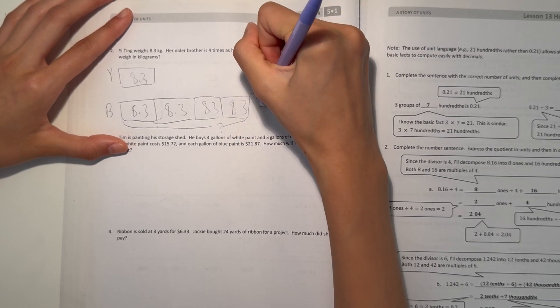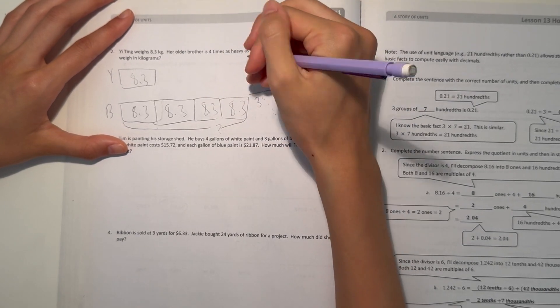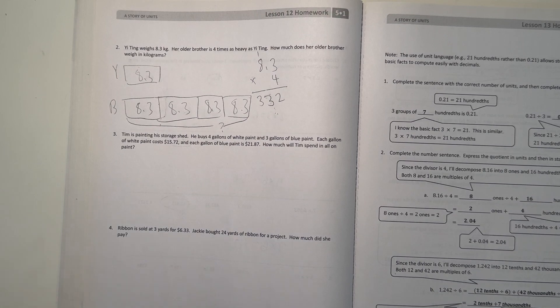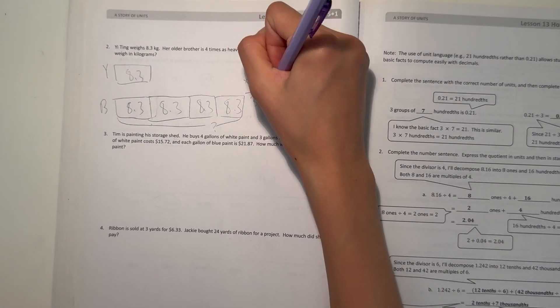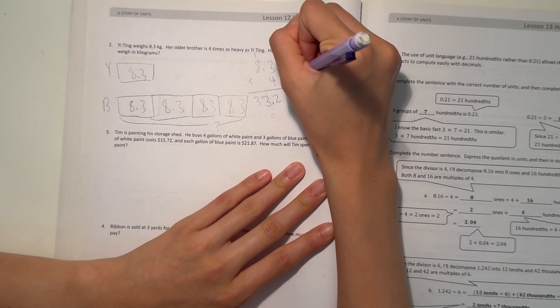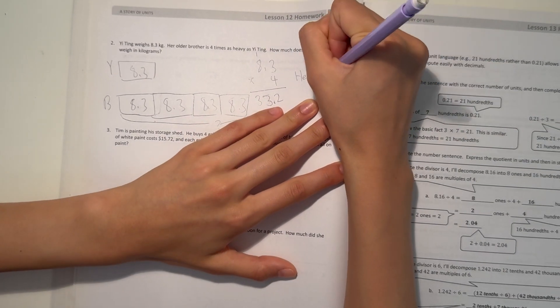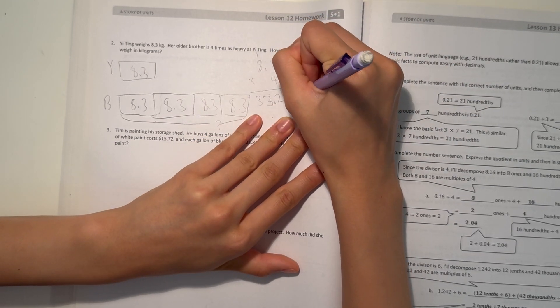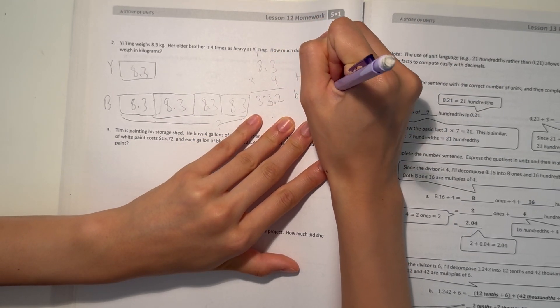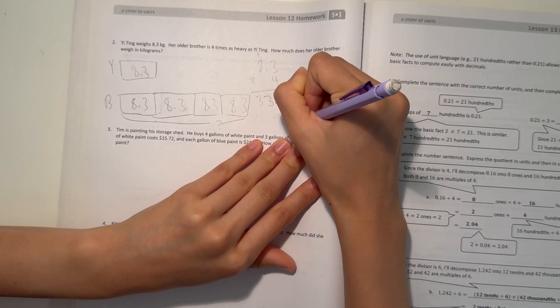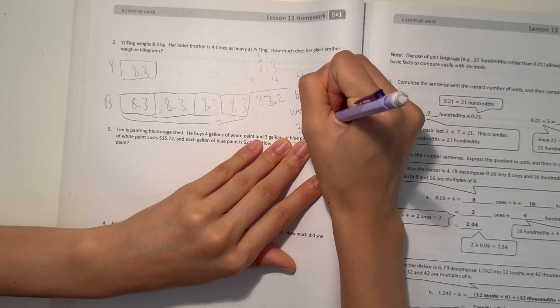Wait, 8 times 4 is 32 plus 1 is 33. So our answer is 33.2. And then we move our decimal point in. Our answer is 33.2. Which means her older brother weighs 33.2 kilograms.